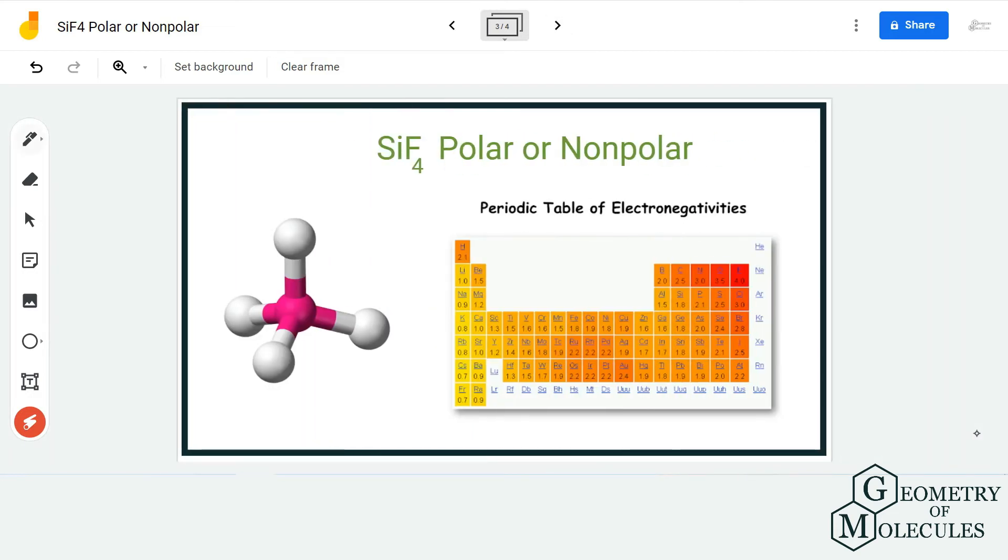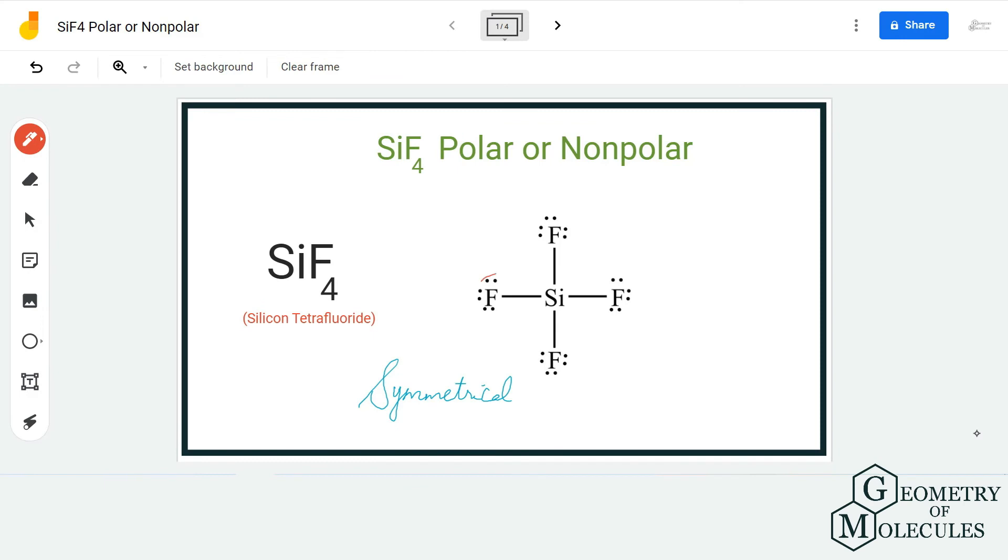Now if you look at the electronegativity values of silicon and fluorine, for fluorine it is 4.0 because it is the most electronegative atom, and for silicon it is 1.8. So the difference is much higher than 0.4, which means that the bonds between silicon and fluorine are polar.